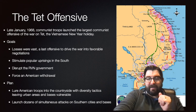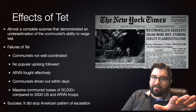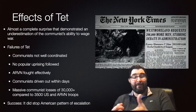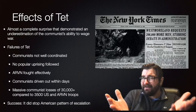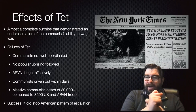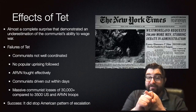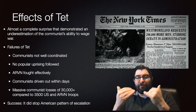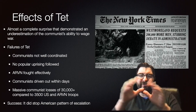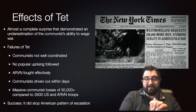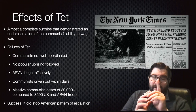The Tet Offensive was almost a complete surprise. The Americans and South Vietnamese were not prepared on this holiday, which was typically a quiet period in the war, and they had underestimated the communists' ability to organize and wage this type of offensive. But it was ultimately a failure for the communists — they were not well-coordinated throughout, they lacked reinforcements after the initial attack, and there was no popular uprising. The Army of the Republic of Vietnam fought effectively alongside American troops, and the communists were driven out of all territory gained within days, suffering massive losses: 30,000 of their invasion force of over 80,000 were killed during the Tet Offensive, compared to 3,500 American and ARVN troops.